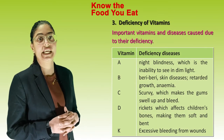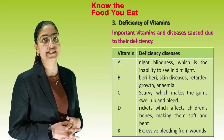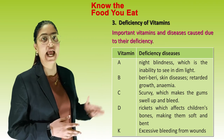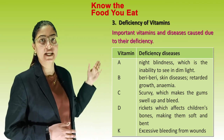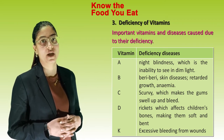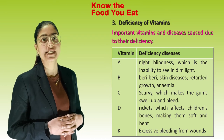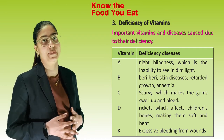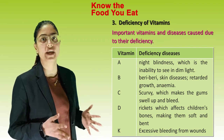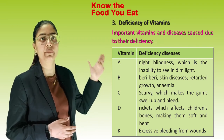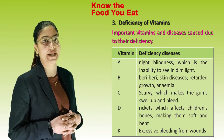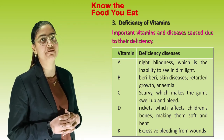Deficiency of vitamins and their associated diseases: Vitamin A — night blindness, which is the inability to see in dim light. Vitamin B — beriberi, skin diseases, retarded growth, anemia. Vitamin C — scurvy, which makes the gums swell up and bleed. Vitamin D — rickets, which affects children's bones making them soft and bent. Vitamin K — excessive bleeding from wounds.